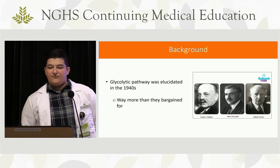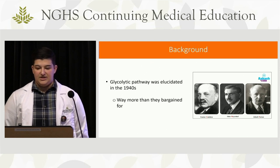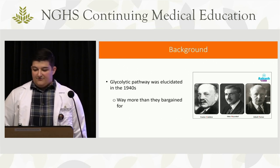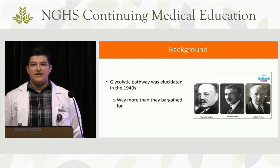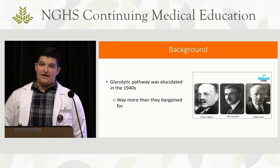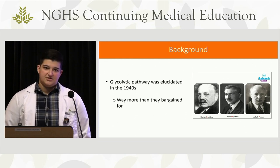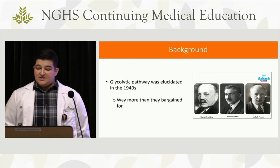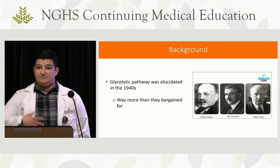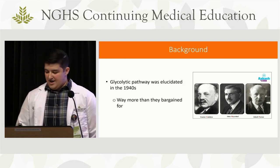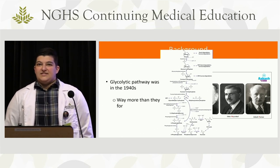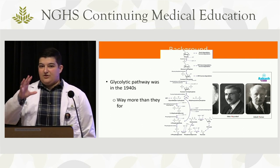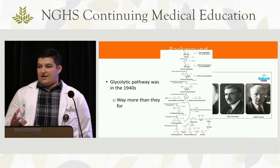Building on that discovery, three scientists — Gustav Embden, Otto Meyerhoff, and Jakob Parnas — formally elucidated what we now call the glycolytic pathway, all the way in the 1940s, almost 100 years later. They thought it would be a fairly simple thing — glucose to lactate — and then this happened. They really helped figure out the gist of the pathway that is now the glycolytic pathway.